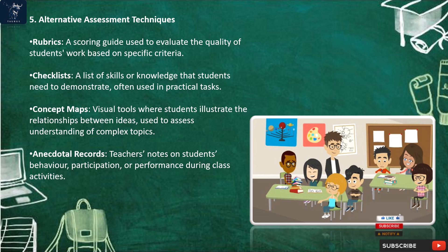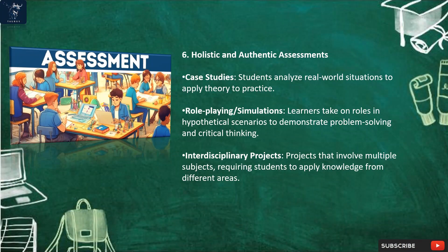Alternative assessment techniques include rubrics, which are scoring guides used to evaluate the quality of students' work based on specific criteria. Checklists are lists of skills or knowledge that students need to demonstrate, often used in practical tasks. Concept maps are visual tools where students illustrate relationships between ideas, used to assess understanding of complex topics. Anecdotal records are teachers' notes on students' behavior, participation, or performance during class activities.